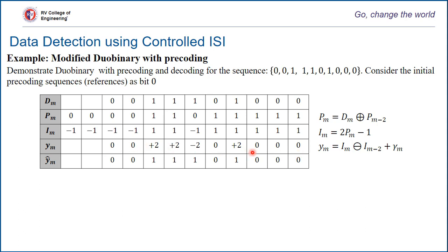This is the output generated at the sampled output of the receiver. The detection rule is: detect as 0 if the magnitude of Y equals 0, and detect as 1 otherwise. When the sample output is greater than 0 or less than 0 — i.e., non-zero — detect it as 1. Plus or minus 2 is detected as 1 and 0 is detected as 0, and as you can see it exactly matches with the transmitted sequence.